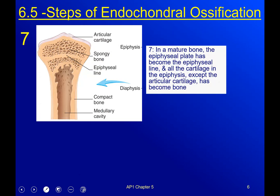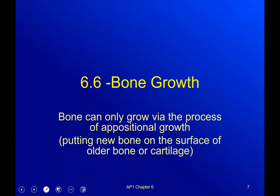In a mature adult bone, the epiphyseal plate has become the epiphyseal line, meaning we are solid bone throughout the long bones — because at this point we're mature enough to reproduce and don't need to grow anymore. All the cartilage in the epiphyses, except for the articular cartilage, has become bone. We still need the articular cartilage so that our joints move smoothly.